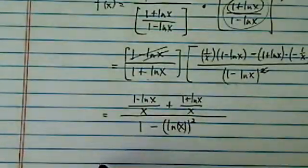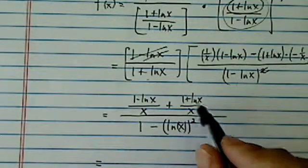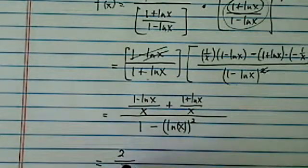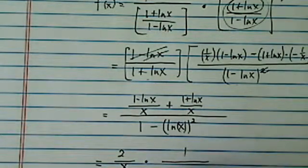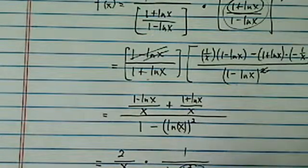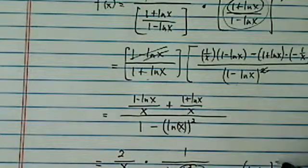That doesn't look too bad. So combine those, natural log cancels out. I have 2 over x times 1 over 1 minus natural log of x. I'm going to put a square here. This is the shorthand to write. It's natural log of x, the whole thing squared.